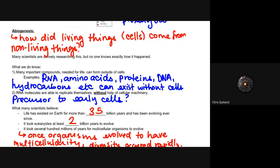Cellular biology, animal biology, plant biology—all sorts of different components of biology are incorporated with the concept of abiogenesis. What we do know is that many important compounds needed for life can form outside of cells. For example, RNA, amino acids, proteins, DNA, and hydrocarbons can all exist without actually being in a cell. In fact, many of them do in terms of viruses and RNA strips outside of cells.